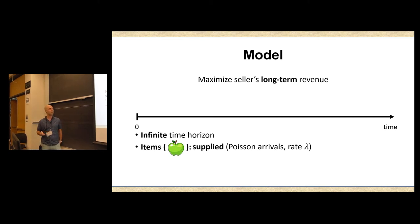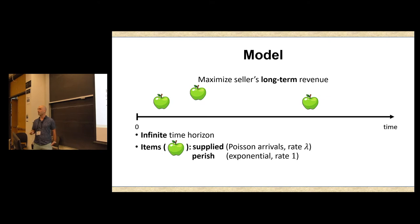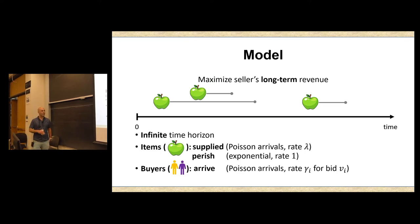And we're going to assume that they're supplied according to a Poisson process with arrival rate lambda. So here's a bunch of apples produced over time. They also perish at an exponential rate of one. So this is the timeline for all of these apples. The buyers on the other hand also show up in random time steps, again, according to Poisson arrivals. The overall arrival rate is sum over the gamma i's. So with rate gamma i, bidders bidding vi will show up.